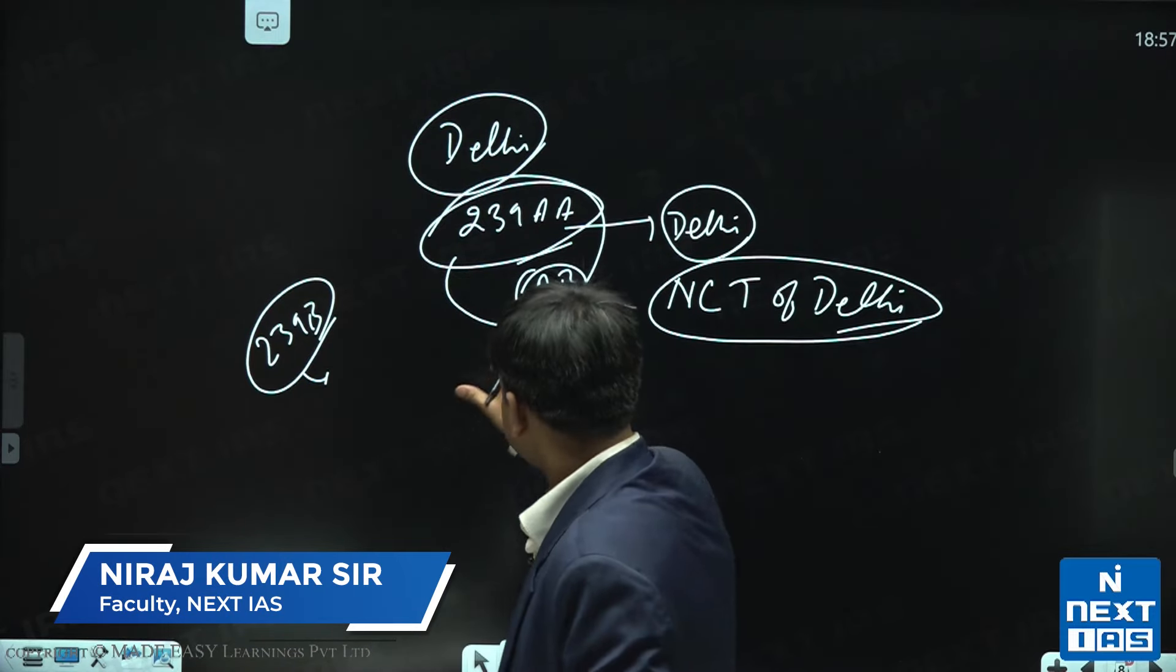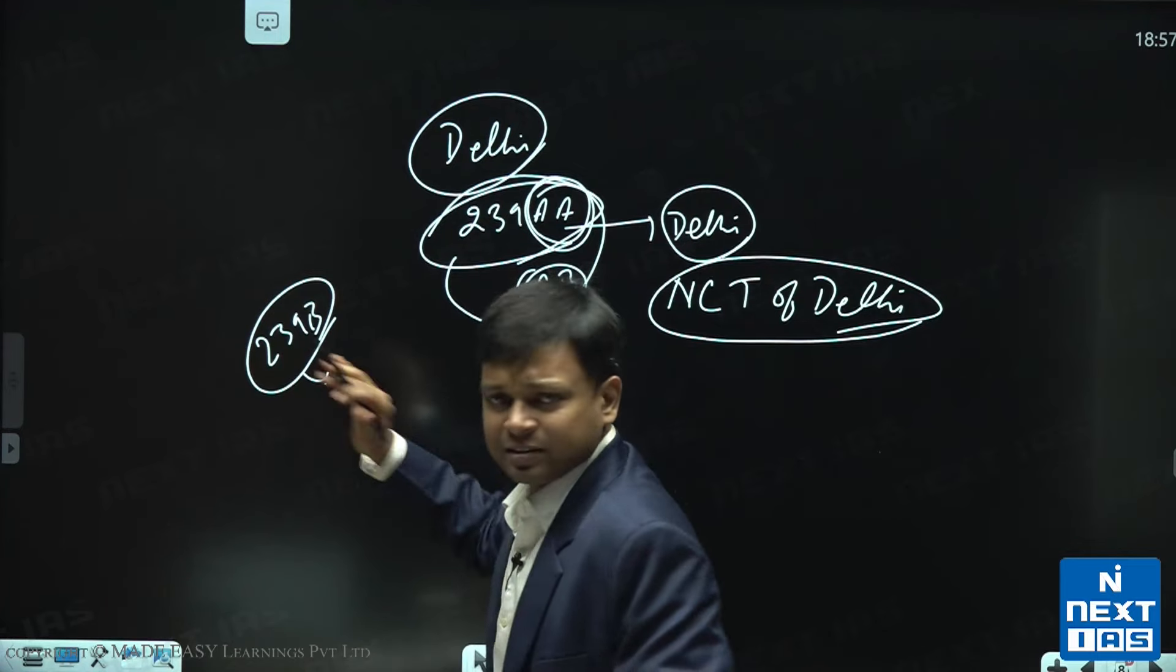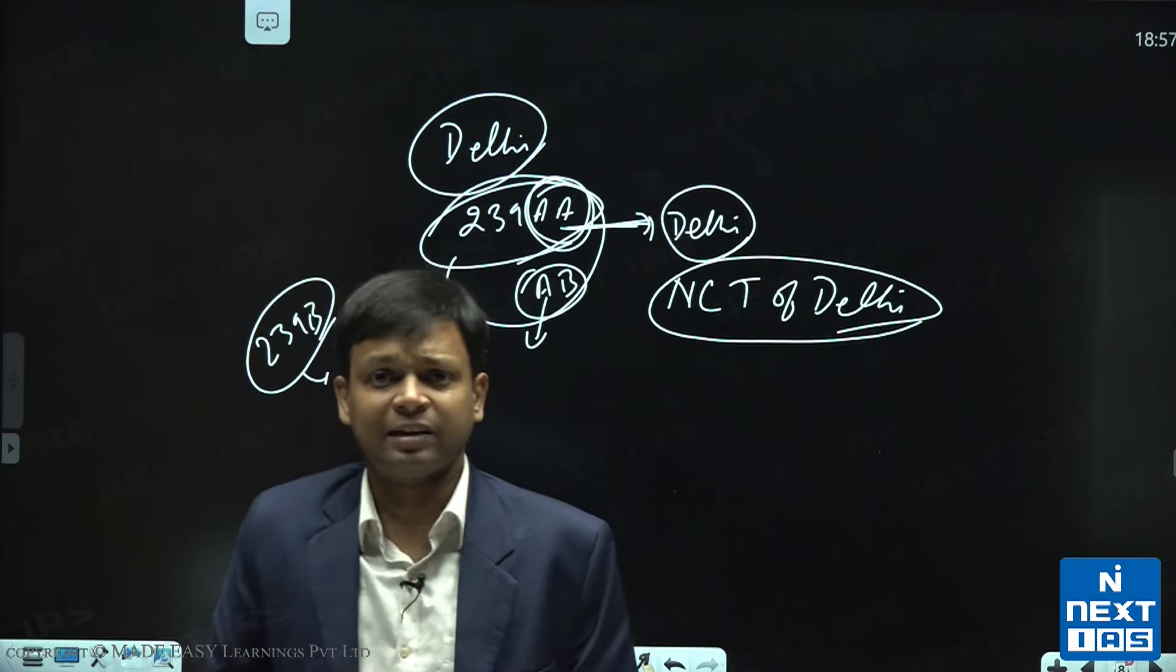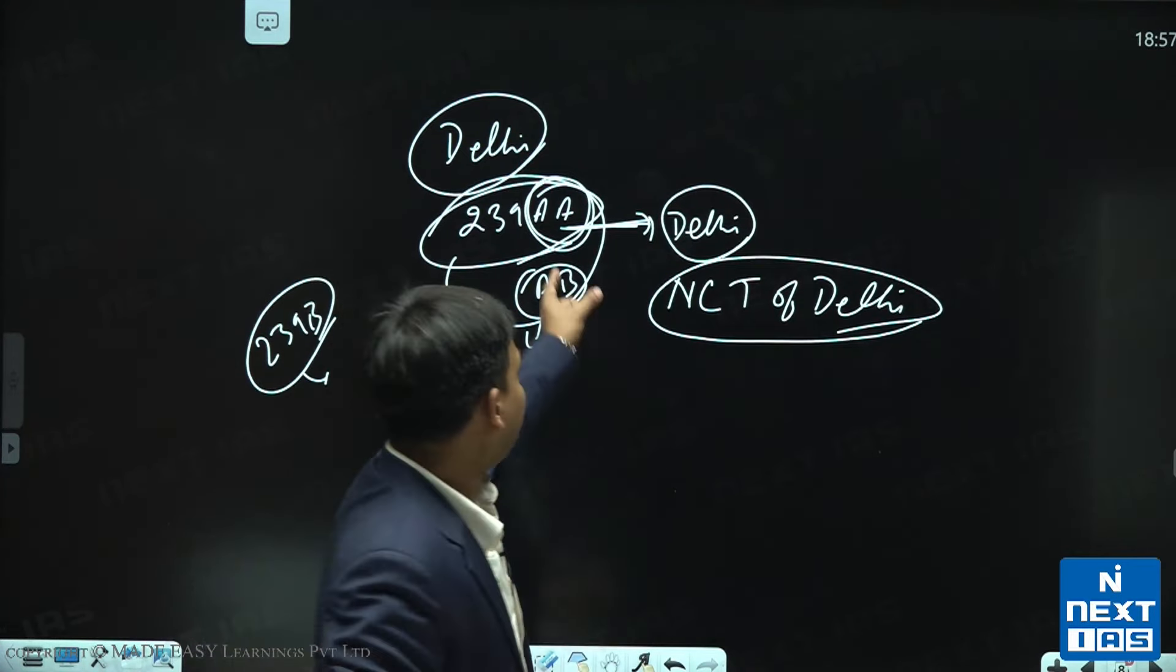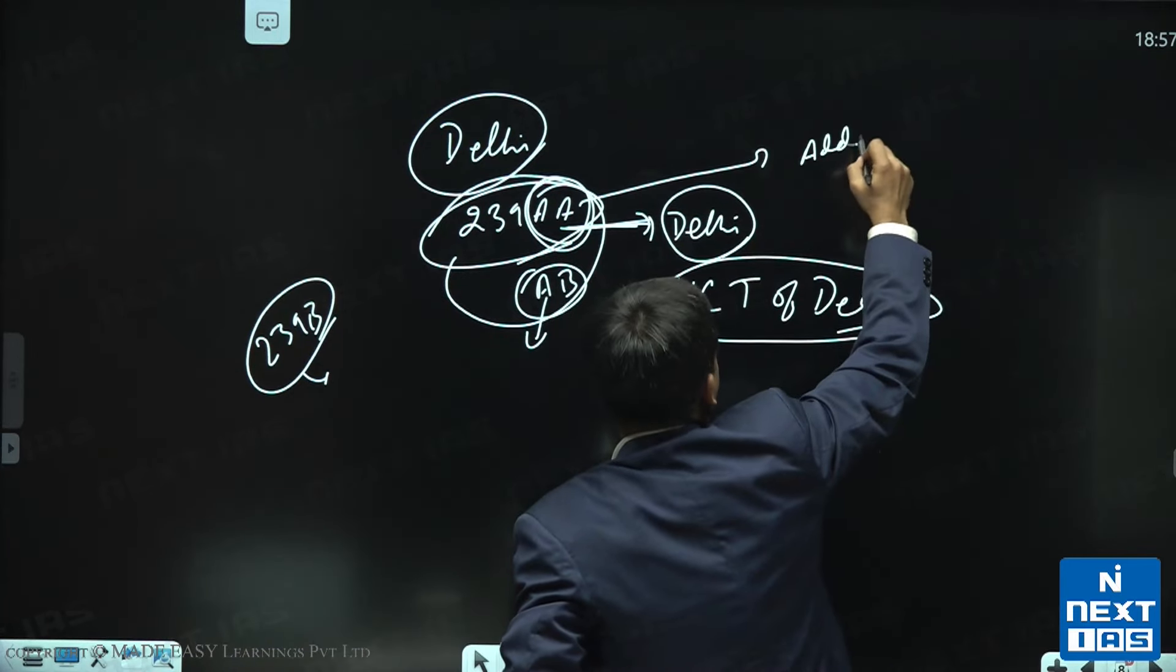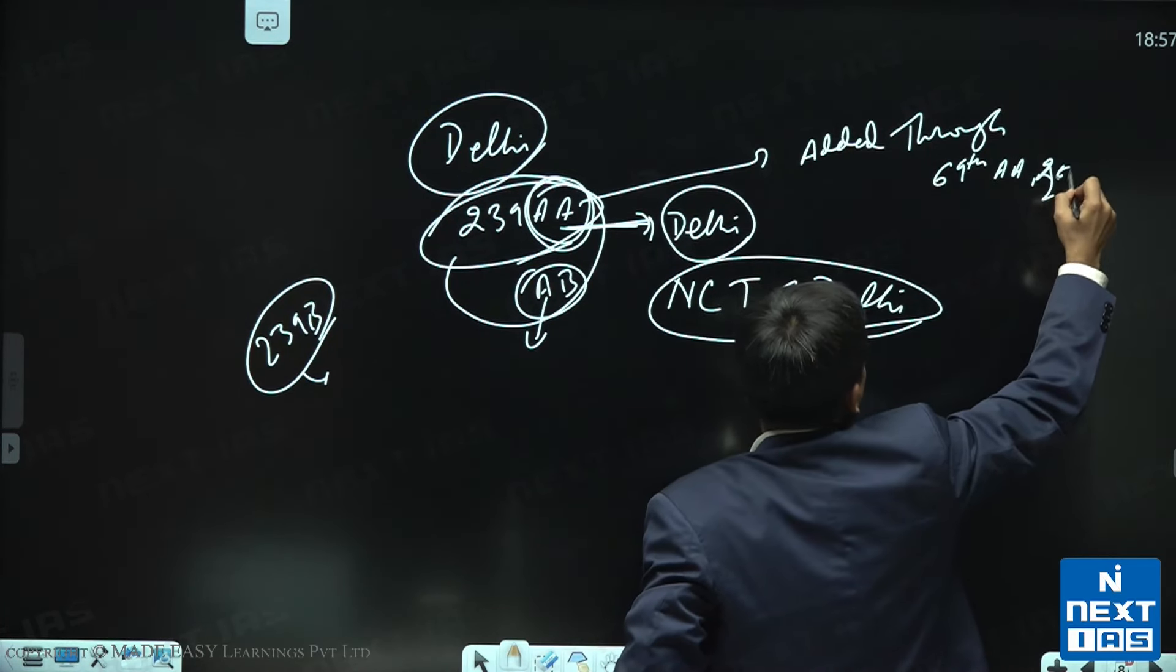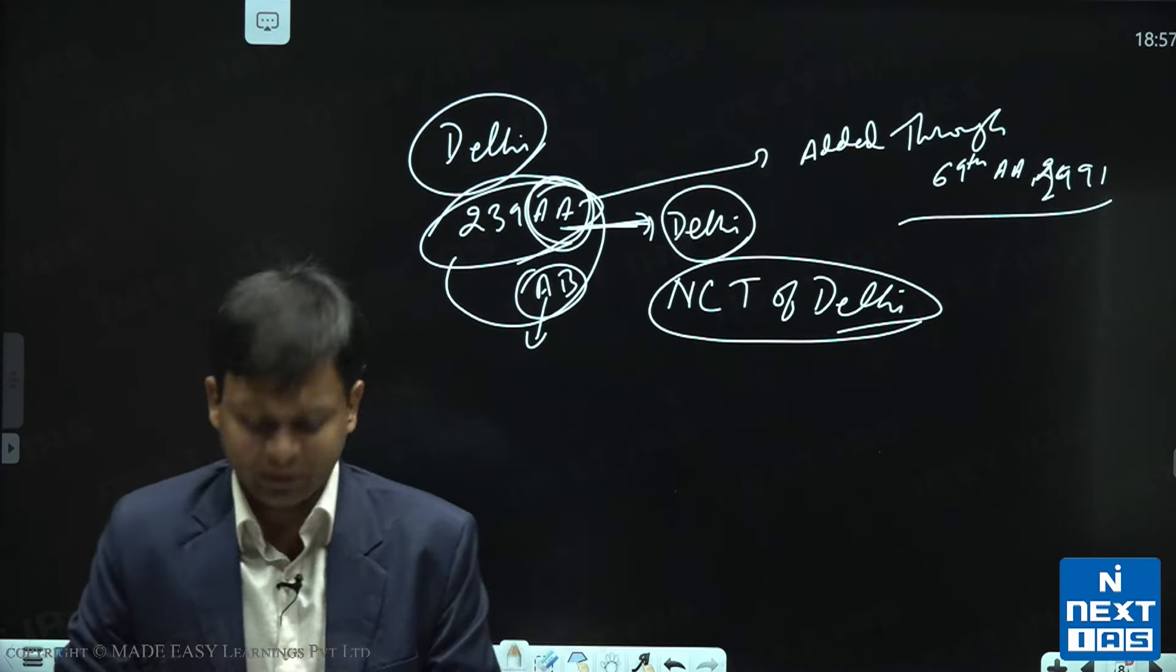Article 239 AA is very important for us. यह article हमारे लिए जादे important है. It is like a mini constitution for Delhi. Delhi में जो assembly बनाया गया, वो इसी article से बनाया गया. This article was added through 69th Amendment Act.